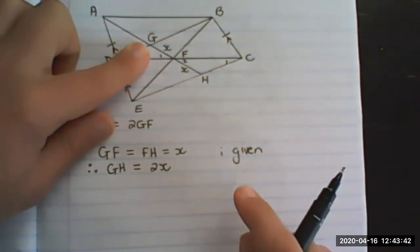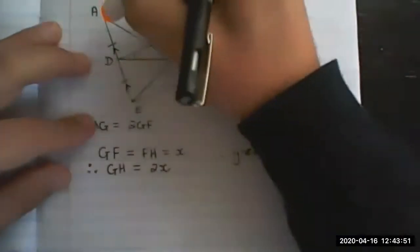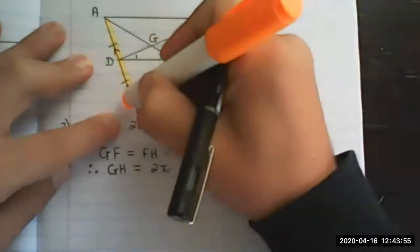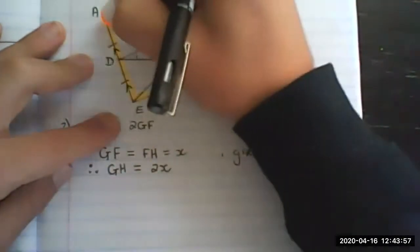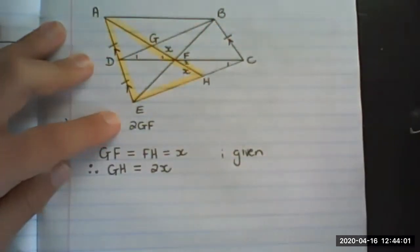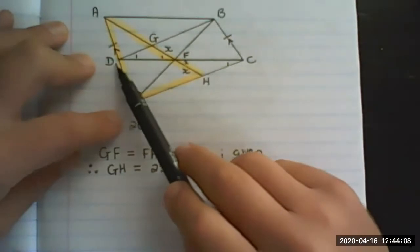Then we need to look at triangle AEH. You can see we're moving towards the midpoint theorem.